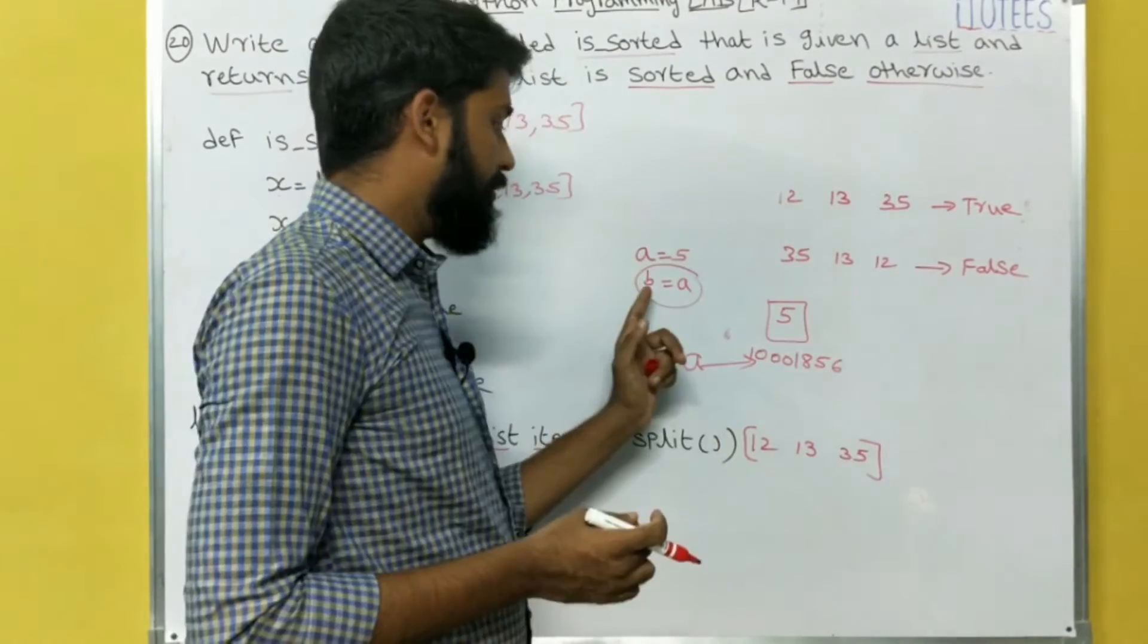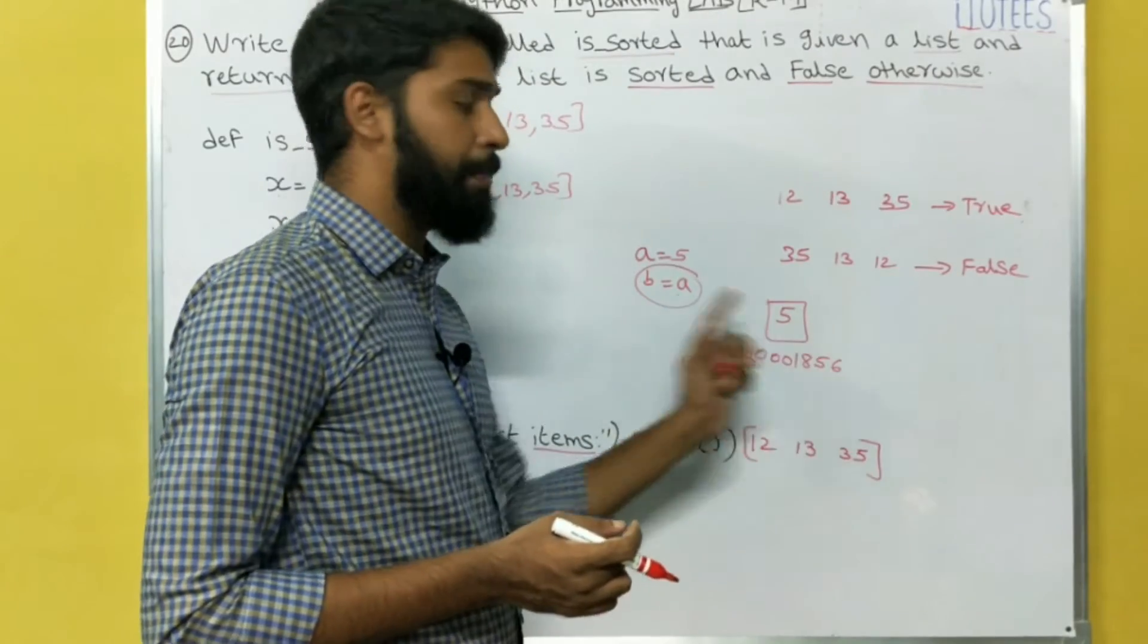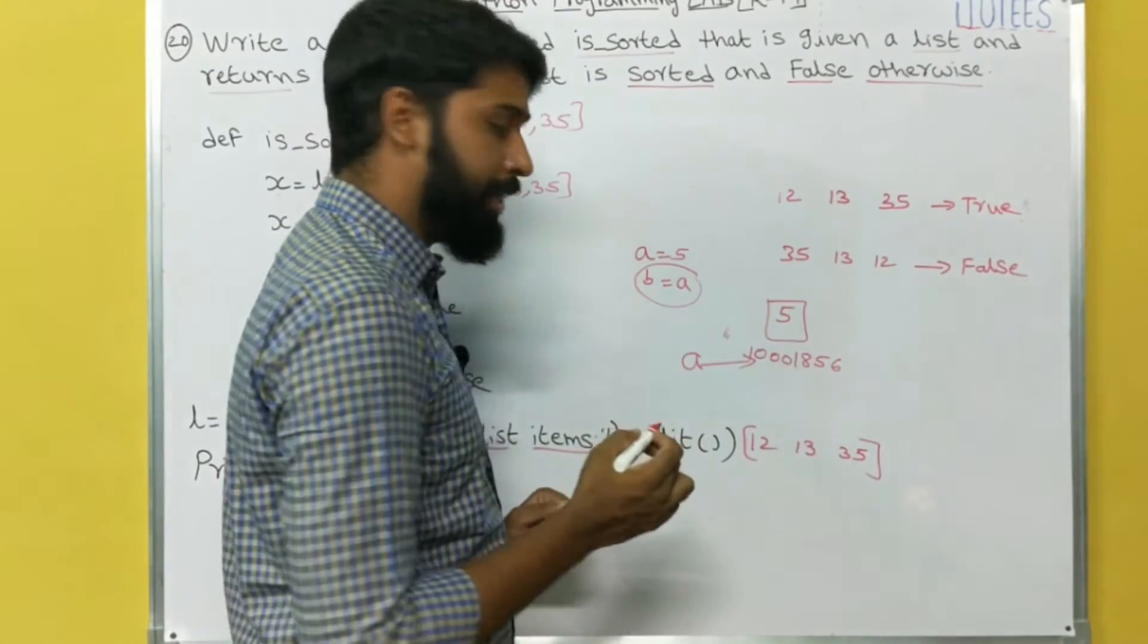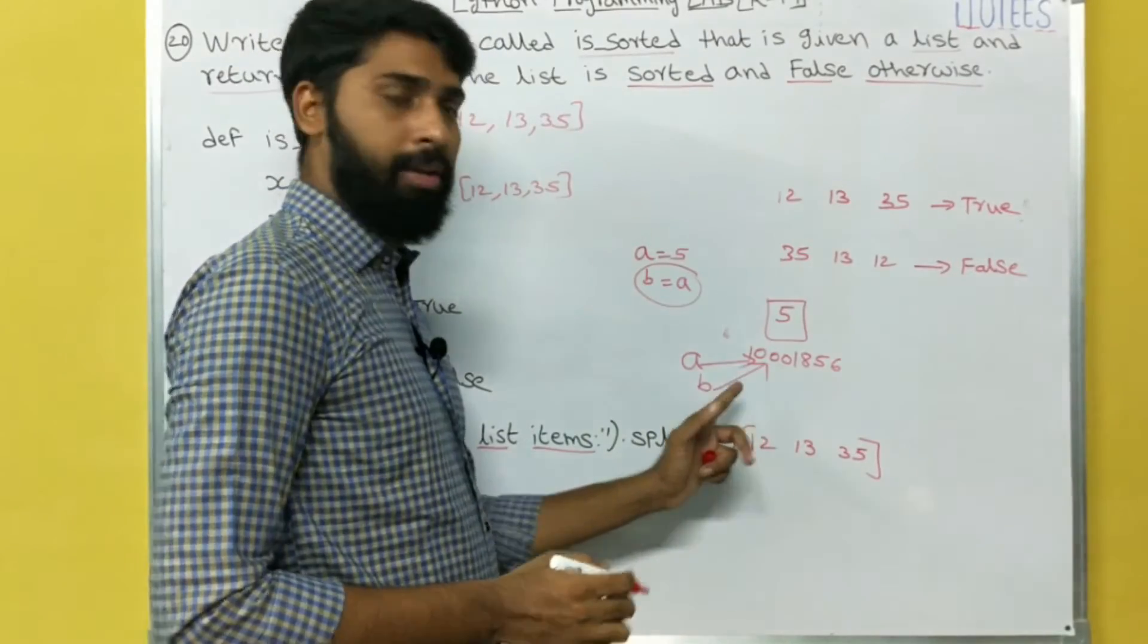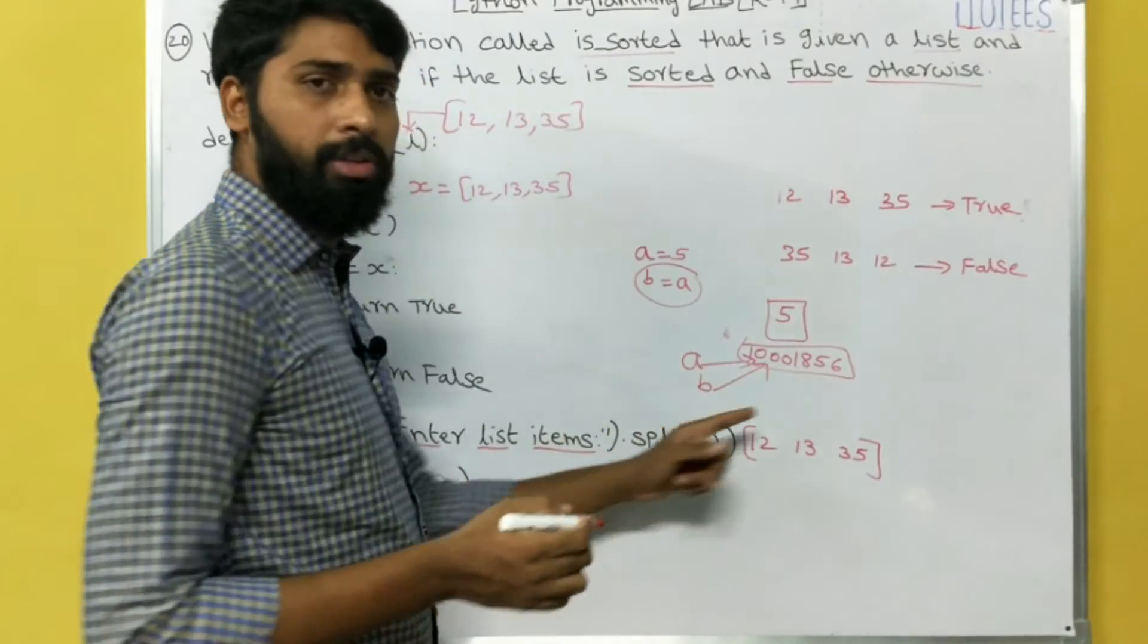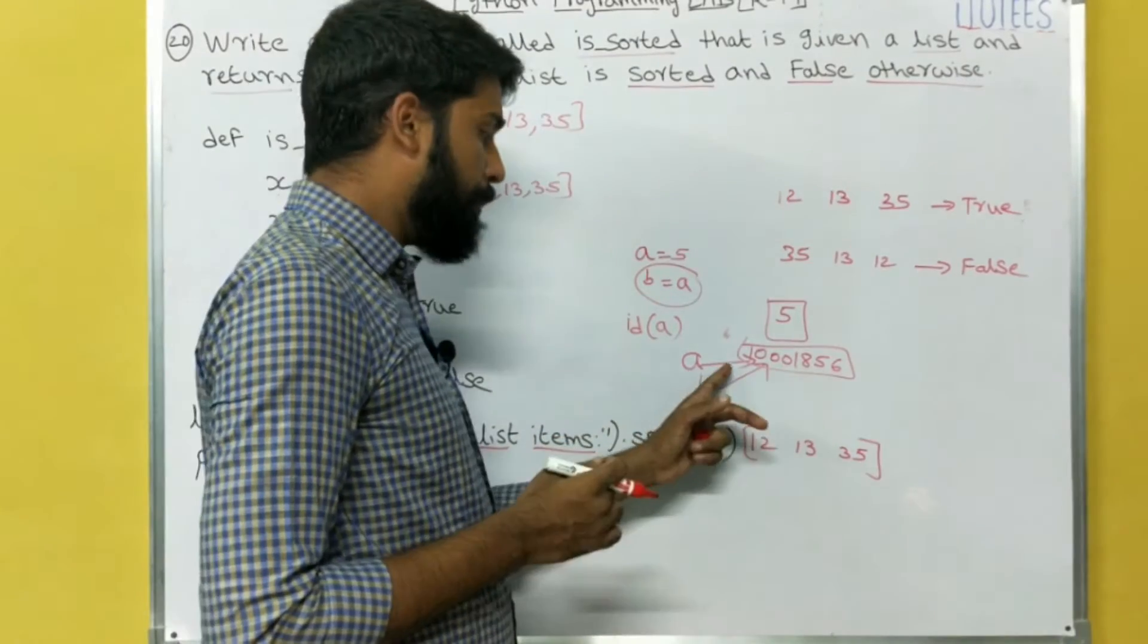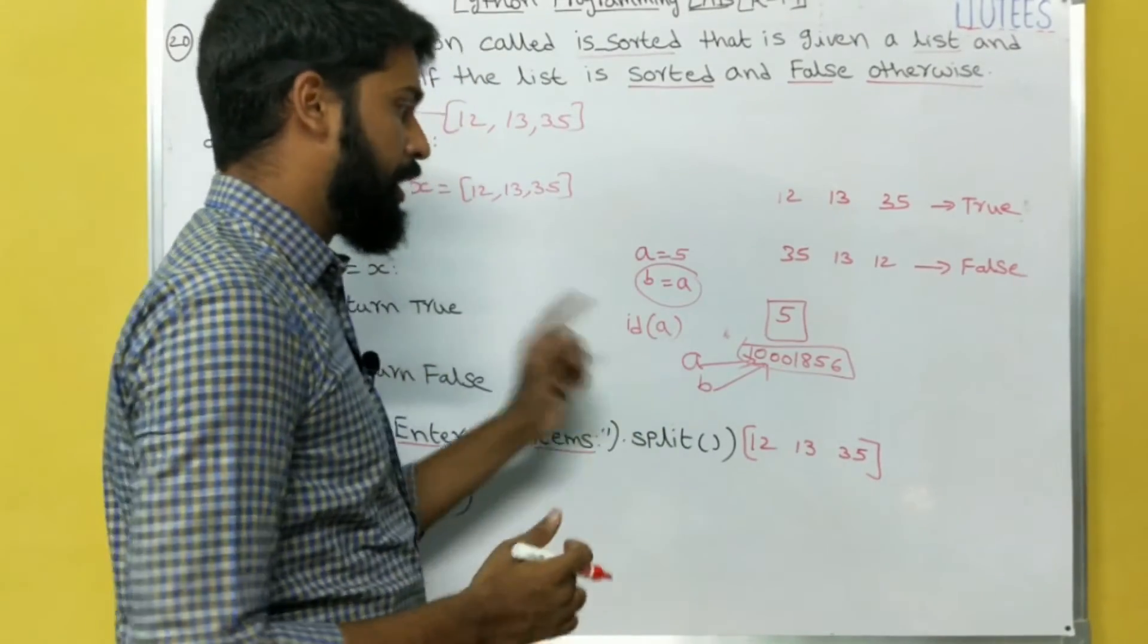The PVM, Python virtual machine, cannot allow a separate memory location. So already 5 is in the memory location, so the same identity is given to B also. That means both A and B have the same ID. If you want to know the ID of the variable, use ID of A. If you print ID of A, then both A and B have the same identity of object.